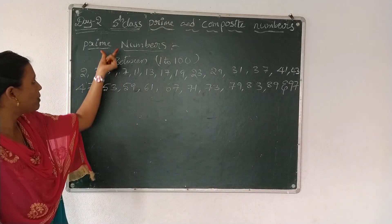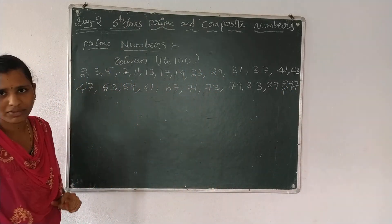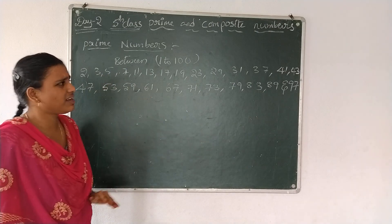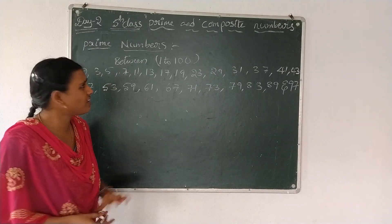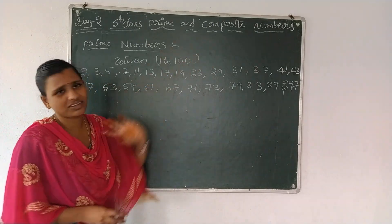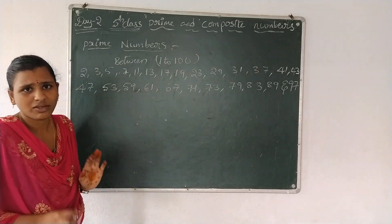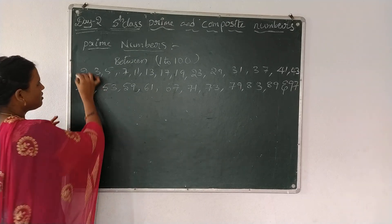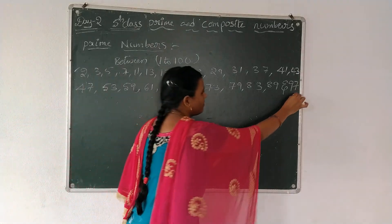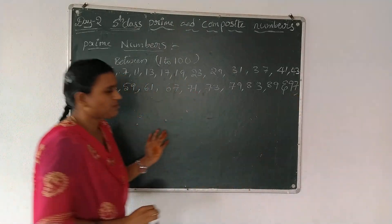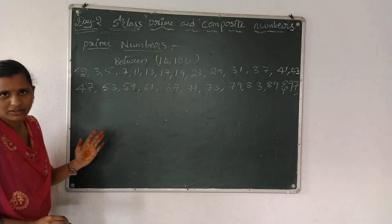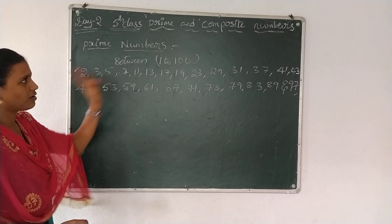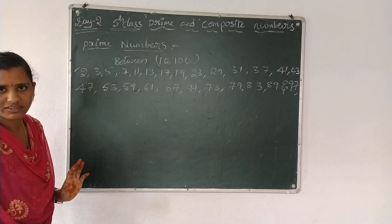These are the prime numbers. The remaining numbers are the composite numbers. You can read from 2 to 97 — these are the prime numbers — and then easily write the composite numbers.